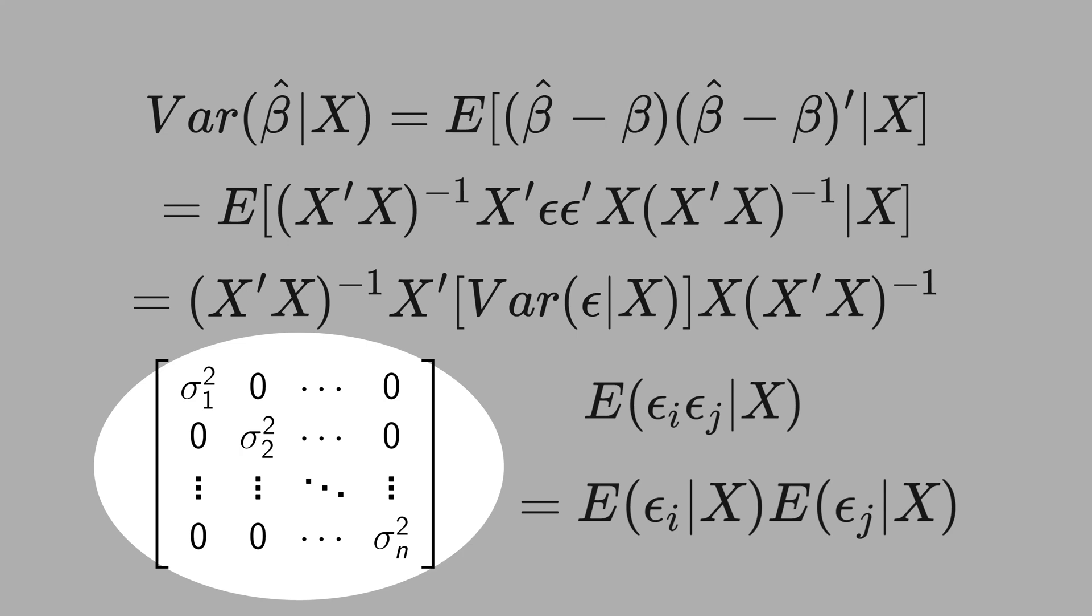Therefore, all these zeros off-diagonal, you are assuming that the errors are independent from each other, and there is no autocorrelation problem. In the diagonal, note the subscripts 1, 2, and n. That means that the variance of the error terms are different, not constant. You are in the case of heteroskedasticity.